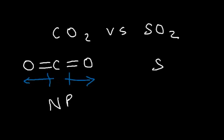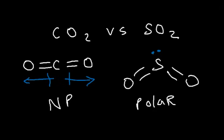Now SO2, if you draw the Lewis structure for that, it has a bent shape. And as a result, this molecule is polar. And so sulfur dioxide will have a higher solubility in water than CO2.